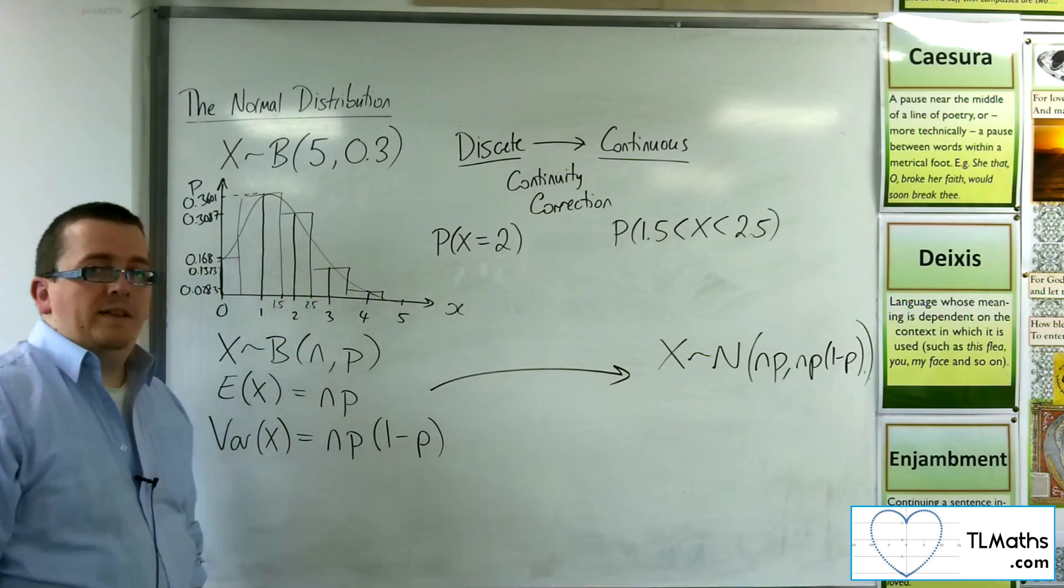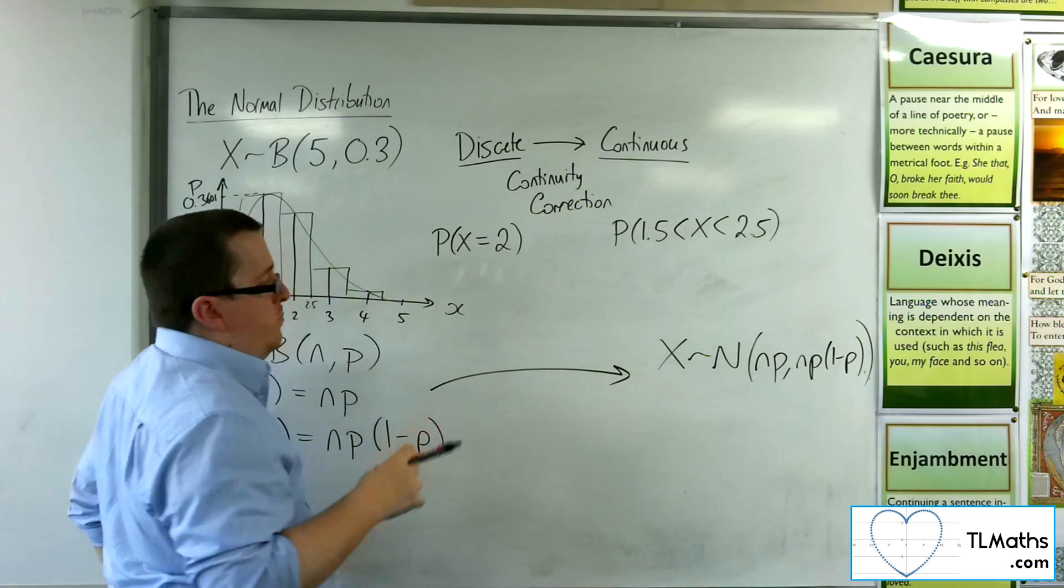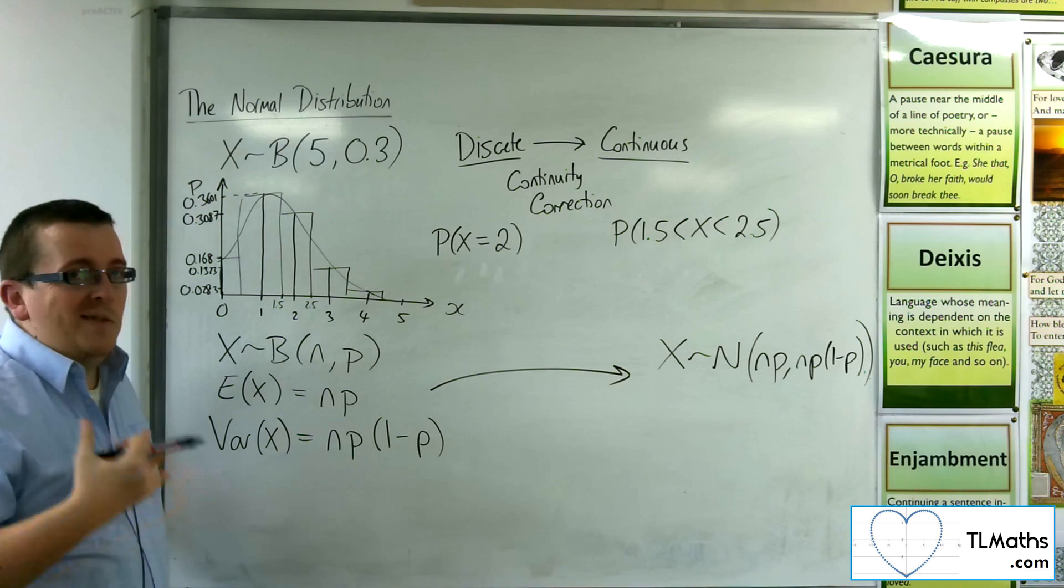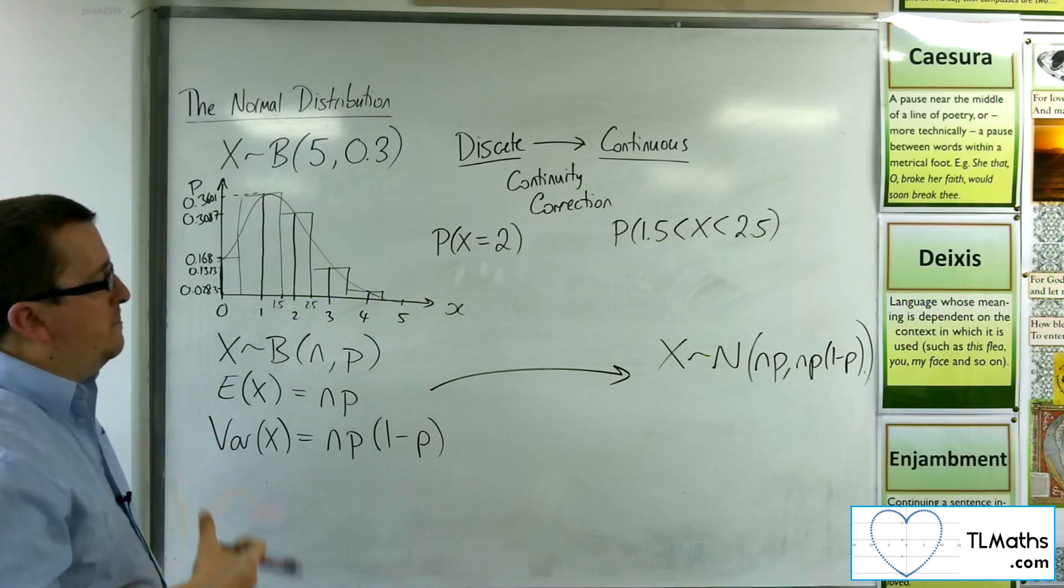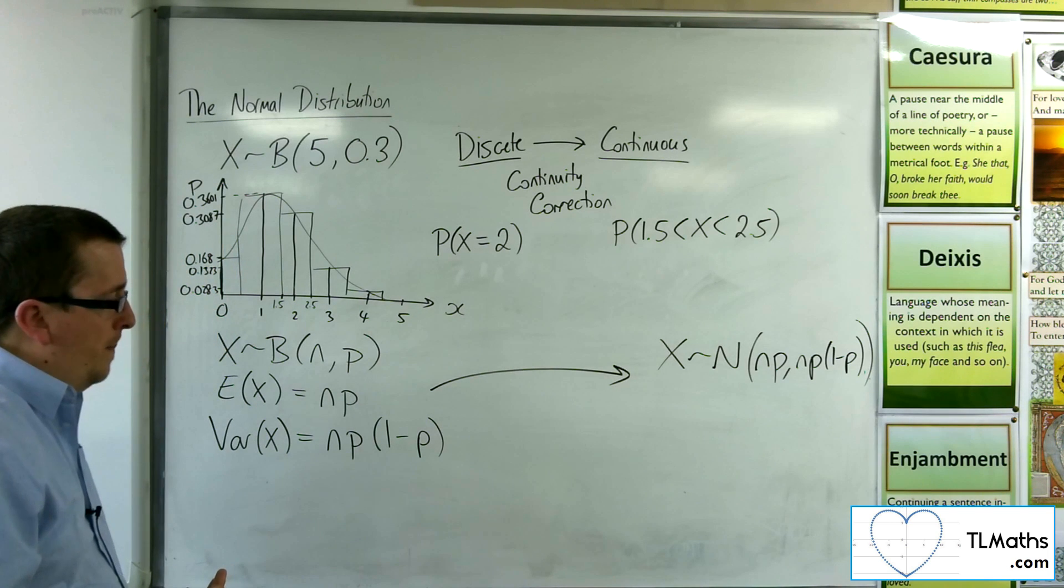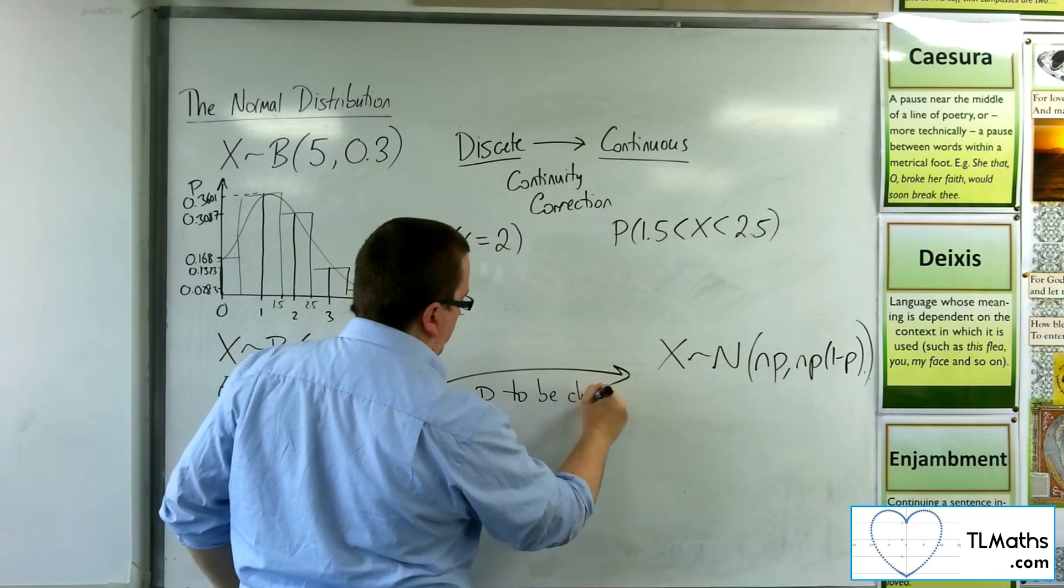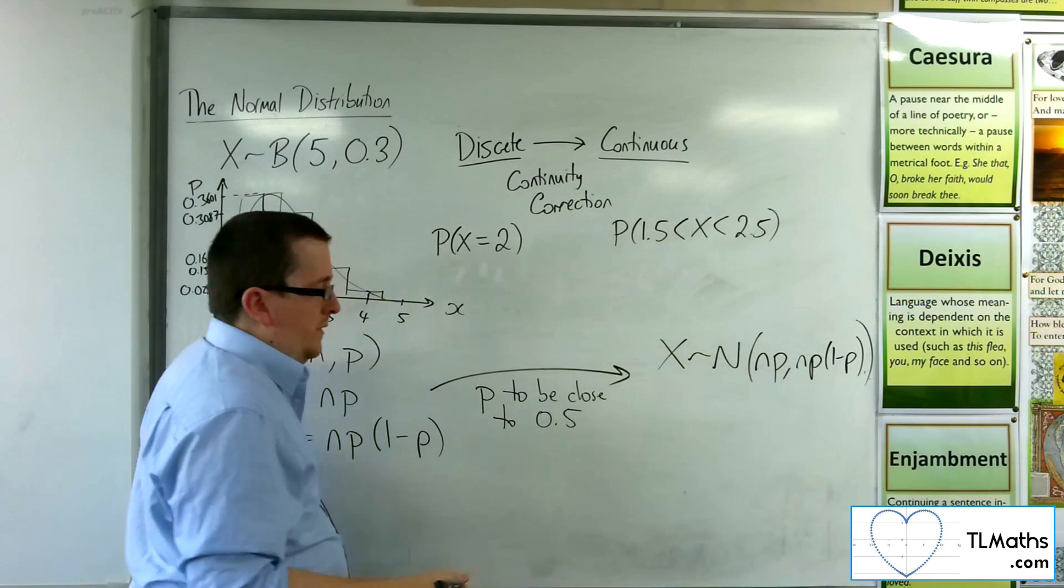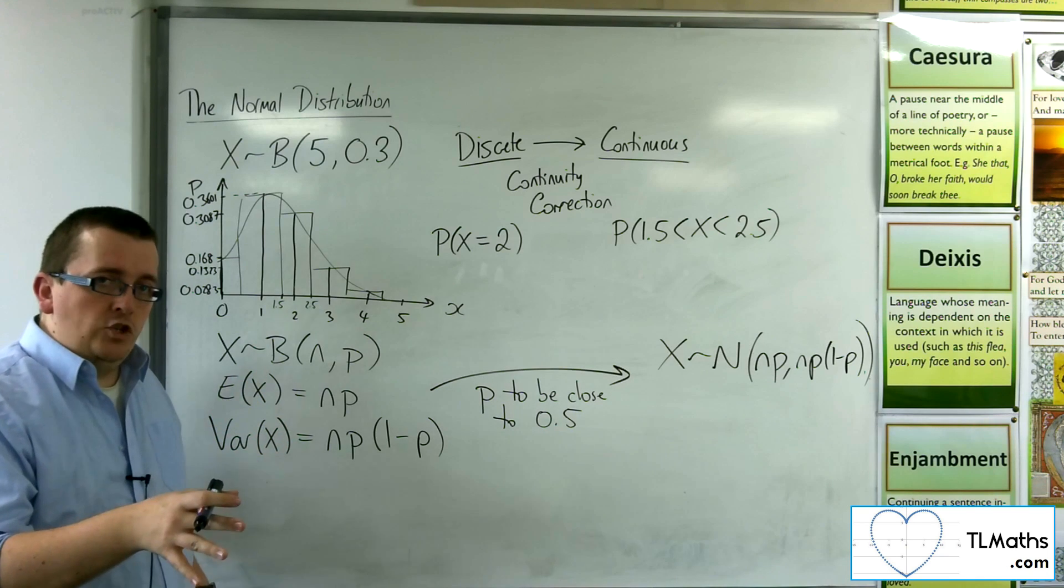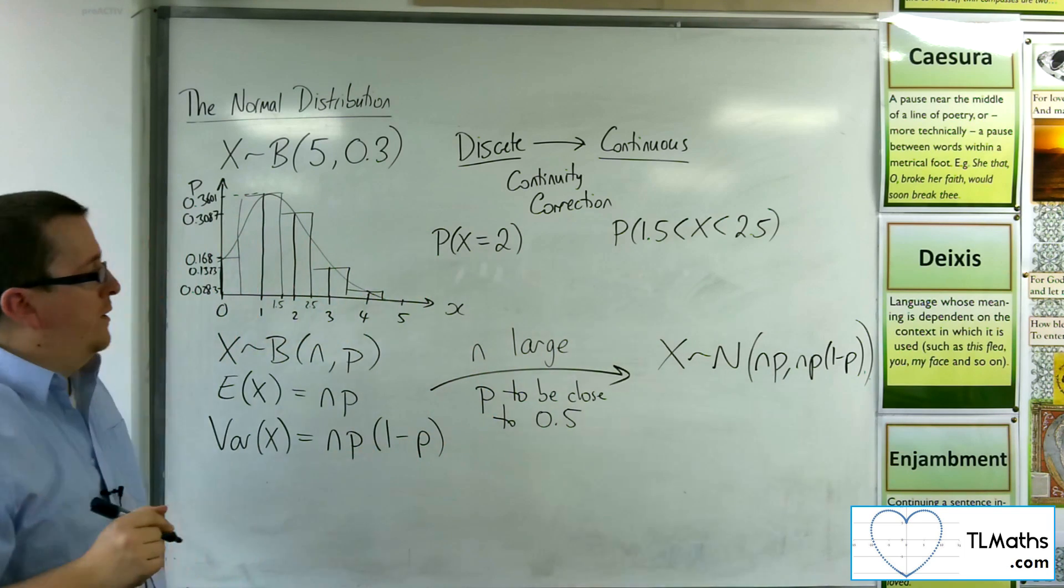Now, there are a few caveats with this. It comes with a disclaimer. Now, in order to get a good approximation using the normal distribution, the more symmetric the original binomial distribution is, the better. And in order for it to be as symmetric as possible, you want the probability to be as close to 0.5 as possible. So, you want p to be close to 0.5. Now, in order to also give you a good approximation to this, and to make it more valid, you also want n to be large.